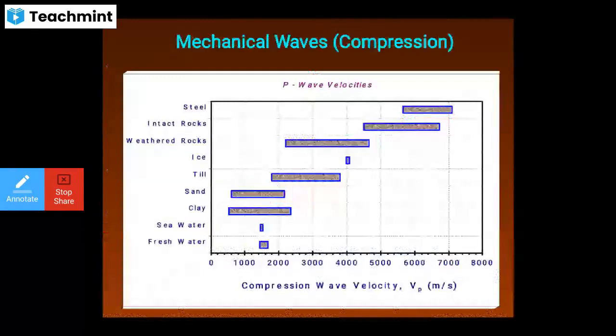For mechanical wave compression, the compression wave velocity Vp varies by material. For steel it is approximately 7000 m/s; for intact rocks it lies between 4200 to 6800 m/s. Values are also shown for weathered rocks, ice, sand, clay, sea water, and fresh water, ranging from 0 to 8000 m/s. The compression wave velocity units are meters per second.